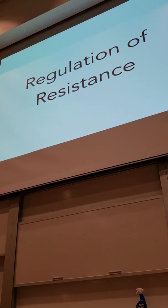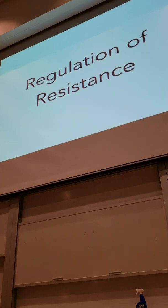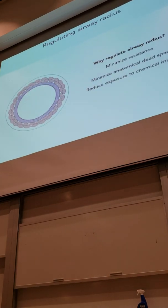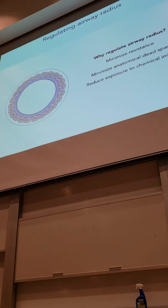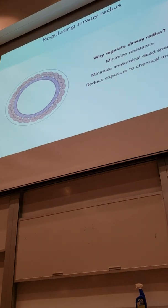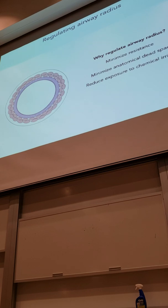One thing I want to preface this by: we are really regulating radius, and radius affects a few things besides resistance — it also affects other things. Why would we want to alter our smooth muscle around our airways? Yes, we'd want to minimize resistance — this makes sense. There's no reason to have extremely small airways if it causes us a lot of energy to make breathing possible. We also want to minimize anatomical dead space. What is anatomical dead space?